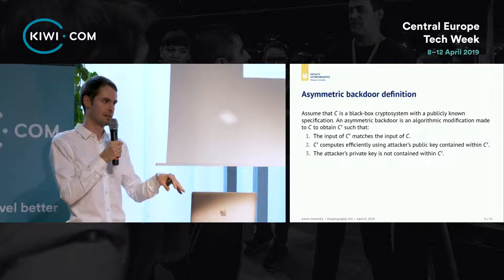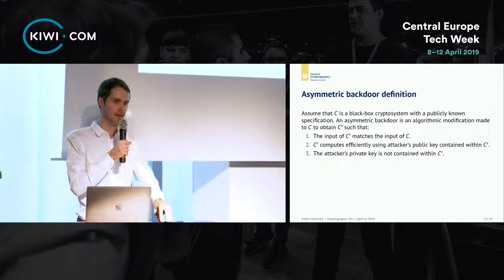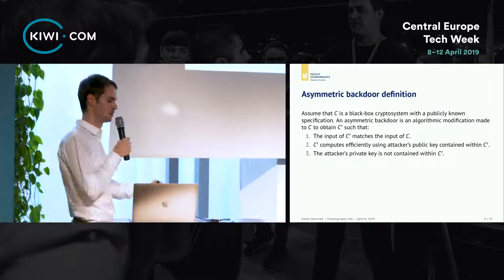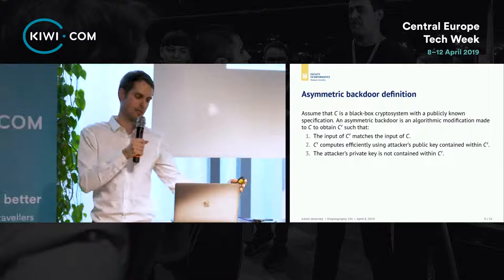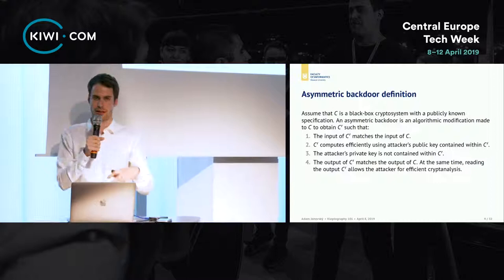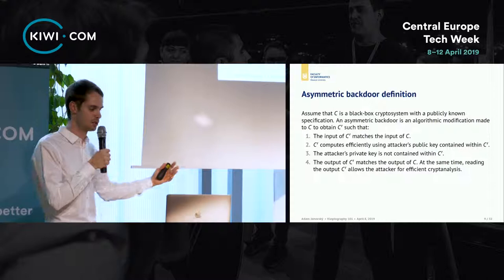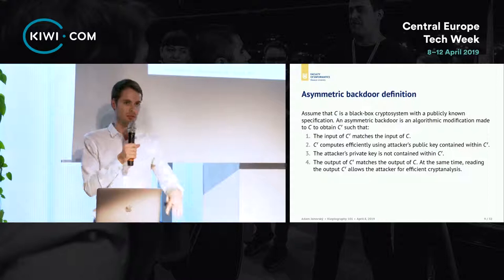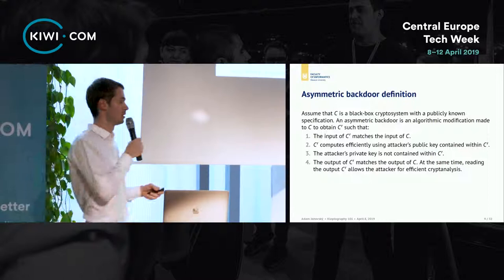The third condition is that the attacker's private key is not contained on the backdoor device. This is important because if the private key were there, after reverse-engineering the device you would have access to the stolen information — and we don't want that as attackers. We want only ourselves to have access. The fourth condition is that the output of the modified algorithm looks the same as the clean algorithm, while at the same time allowing the attacker to cryptanalyze it — to break the original algorithm.